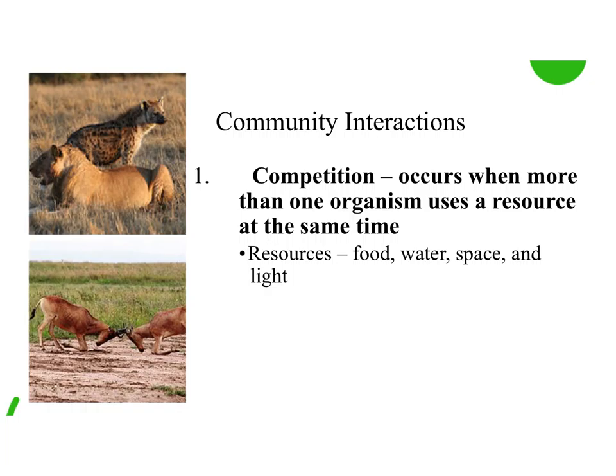Today we're going to continue on and talk about community interactions. We're going to start with competition. One type of community interaction is competition — it occurs when more than one organism uses a resource at the same time. Think of it as organisms competing for the same resource at the same time. Resources could be food, water, space, or light.